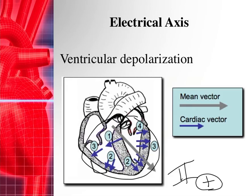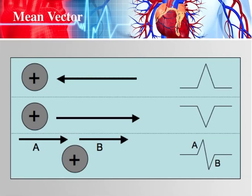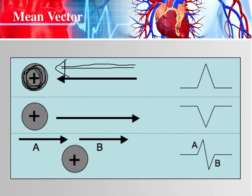Depending on which lead you're looking at, if the wave of depolarization is moving towards that lead's positive electrode — if your QRS axis or mean vector is moving towards that electrode — you'll get a good upright QRS complex. If it's moving away from the positive electrode, you get a negative wave.